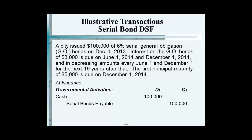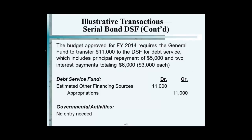First year, they're using a budget here. Estimated — whenever you see the word estimated and appropriation, those are what are called budgetary accounts. Do you record budgetary accounts? No. In governmental activities, none.